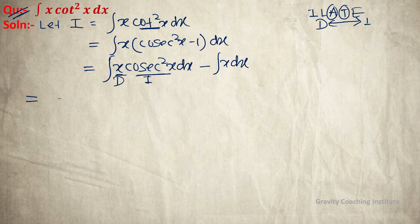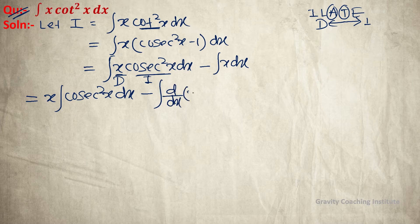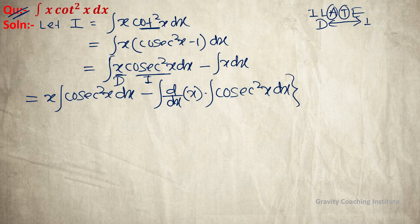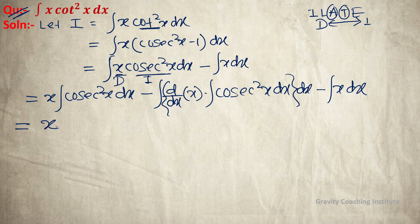Using integration by parts: x into integration of cos square x dx minus integration of differentiation of x into integration of cos square x dx, minus integration x dx. This gives x into cos square x minus cot x, minus integration of that expression.